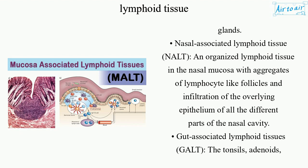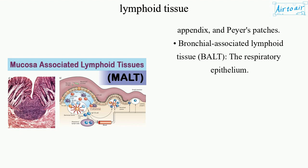Gut-associated lymphoid tissues (GALT) include the tonsils, adenoids, appendix, and Peyer's patches. Bronchial-associated lymphoid tissue (BALT) refers to the respiratory epithelium.